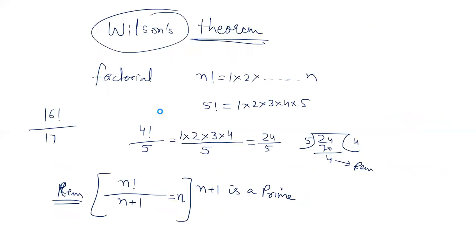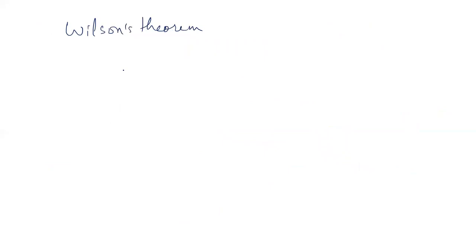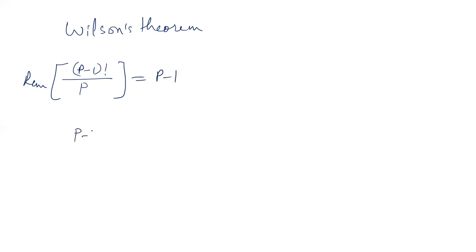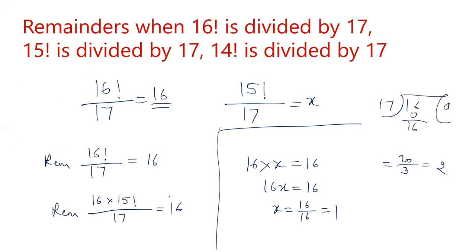Let's write down the two theorems. Wilson's theorem and its corollary: if p is a prime number and we divide (p−1) factorial by p, then the remainder will always be p−1. This is the first result. And if you divide (p−2) factorial by p, where p is prime, then the remainder will always be 1. These are the two generalized forms of Wilson's theorem.